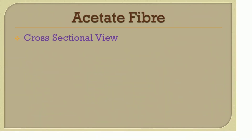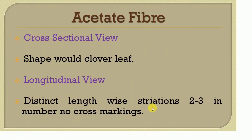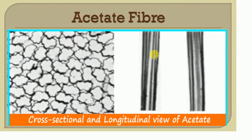Acetate fiber in cross-sectional view has a clover-leaf shape, meaning it looks like a leaf. In longitudinal view, it shows distinct lengthwise striations, two to three in number, with no cross markings. In the image, the striations are visible in longitudinal view, and in cross-section the structure looks like a leaf. Nylon fiber follows next.